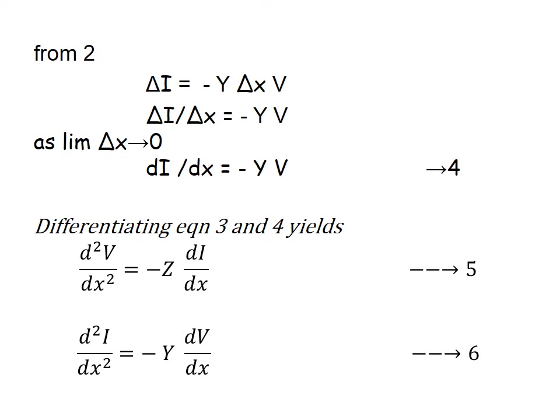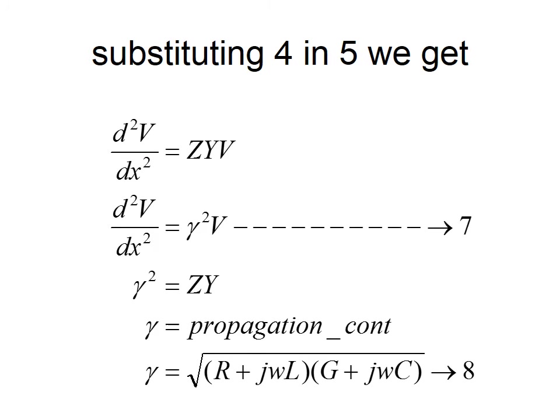Differentiating equations 3 and 4 yields second-order derivatives: d²V/dx² = −Z times the current gradient, and d²I/dx² = −Y times the voltage gradient. Substituting the current gradient from equation 4 into equation 5, the negatives cancel, and the second-order differentiation of voltage becomes γ²V, where γ² is the product of the series impedance Z and the shunt admittance Y.